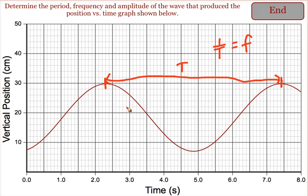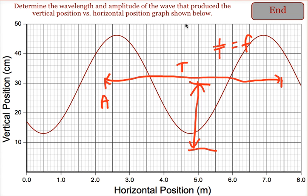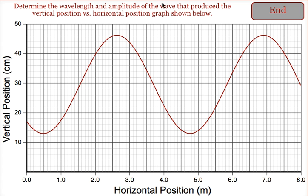So you should be able to find, from your graph of position versus time, amplitude, half the total height of the wave, period, the time it takes the wave to make one cycle, frequency, the number of cycles it makes per second, which is the inverse of the period, and if you have a graph of position versus horizontal position, then you should be able to get the wavelength of the wave.